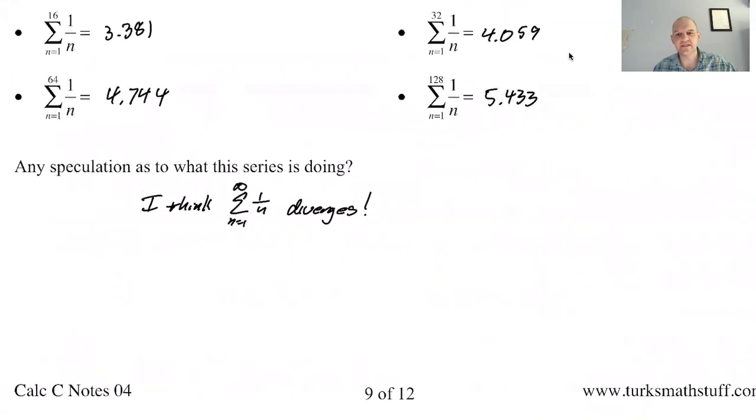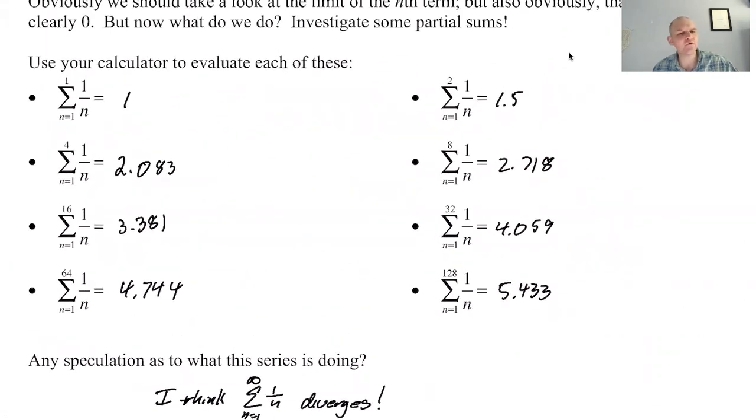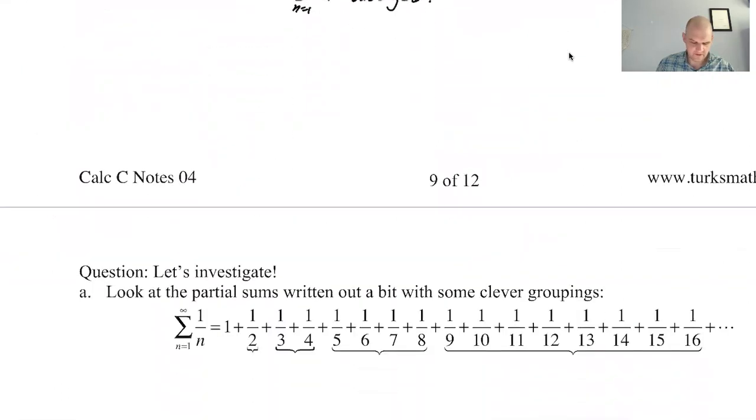And so what we did was we just looked at powers of 2 as the upper bound. So from 1 to 1, 1 to 2, 1 to 4, 1 to 8, et cetera. It definitely looks like this thing is growing without bounds. But it's not really enough, because maybe it is converging to, I don't know, 735. There's no way to know. So what we need is something better.